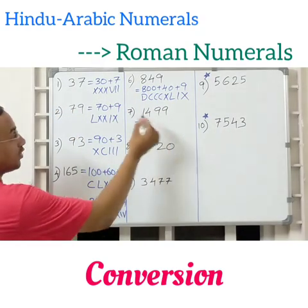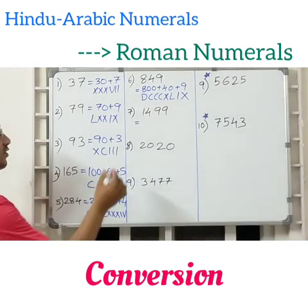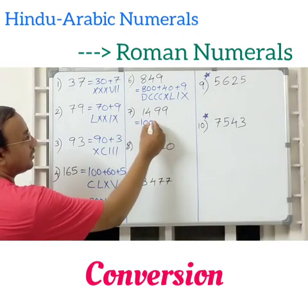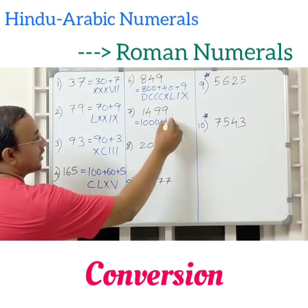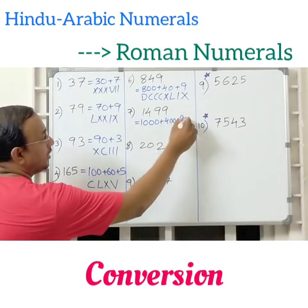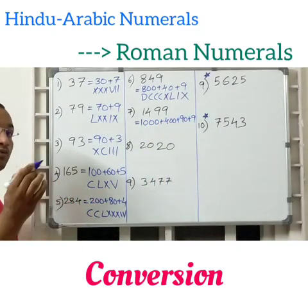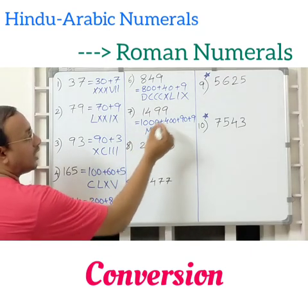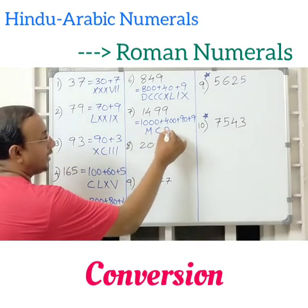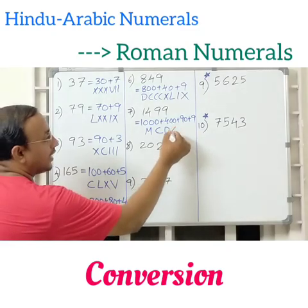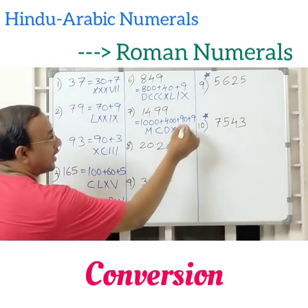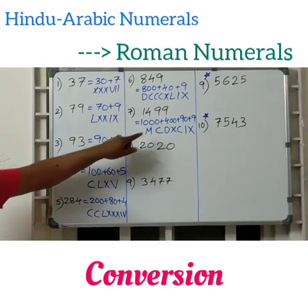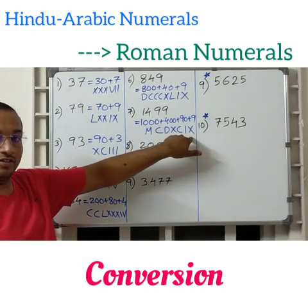So a 4-digit number we have. Writing it as expanded form first: 1499 is 1000 plus 400 plus 90 plus 9. 1000 you know — it is M. And 400 is nothing but CD. 90 is nothing but XC, and 9 is IX. So 1499 in Roman numerals is M CD XC IX.